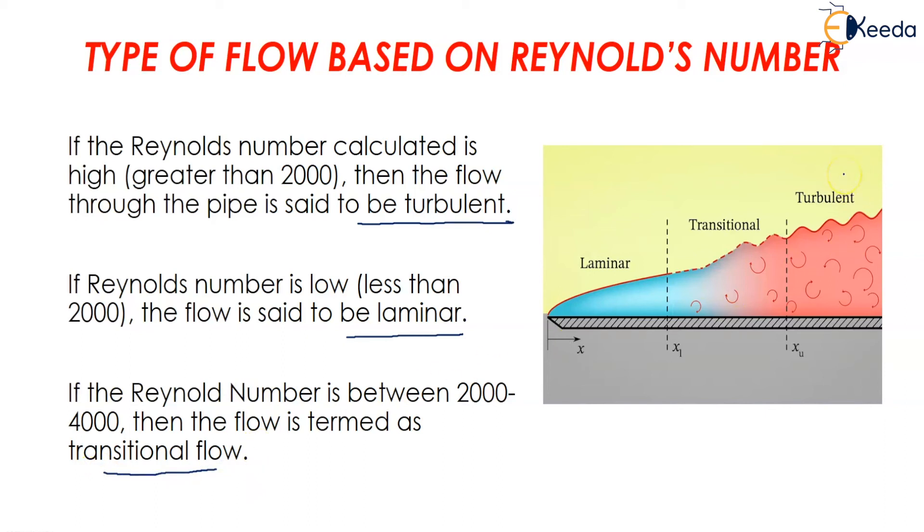So over here in this diagram I can say if my Reynolds number is less than 2000 then the flow is termed as laminar. But if the Reynolds number is greater than 4000 the flow is termed to be turbulent flow.